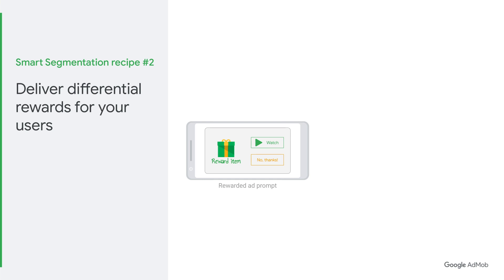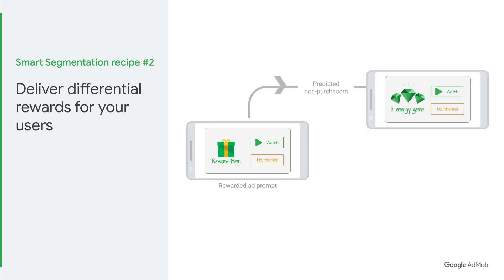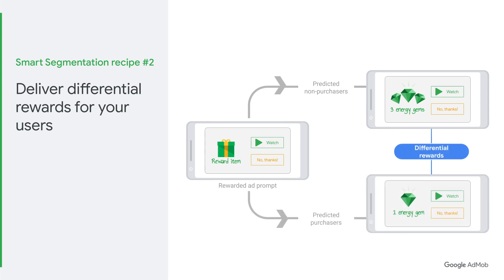First, the smart segmentation model will trigger a rewarded smart segmentation request. This indicates that we should set a reward item to a high value for our predicted non-spenders. This would attract them to watch the rewarded ad and help us increase their lifetime value via ads revenue. To our group of predicted spenders, we will serve a regular rewarded ad with a regular value reward to avoid affecting their motivation to purchase IAPs.